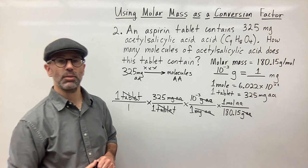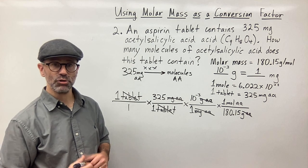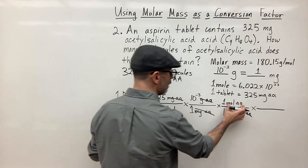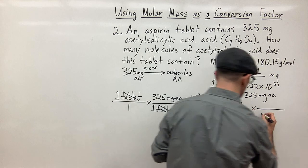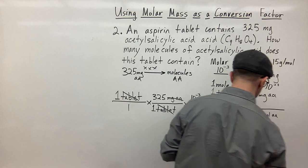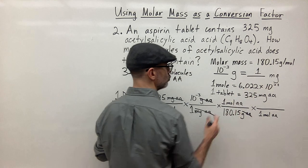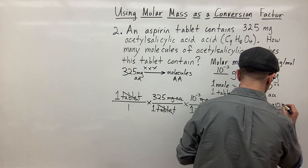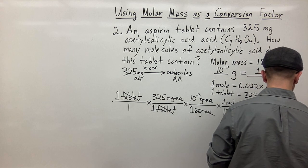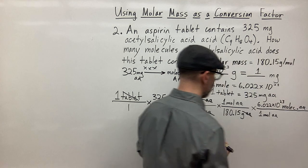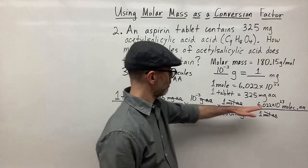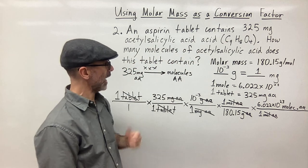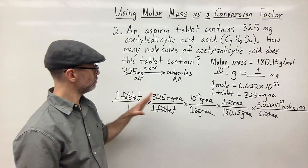Now I can use Avogadro's number to convert from moles to molecules of AA. One last step: I have moles here, so I put one mole of AA on the bottom and 6.022 times 10 to the 23rd molecules of AA on top. Moles of AA cancel out and now I have molecules of AA on top — exactly what they're asking. Now all I need to do is multiply and divide.